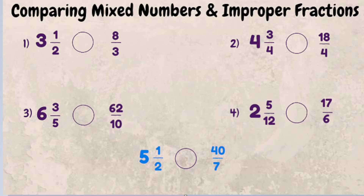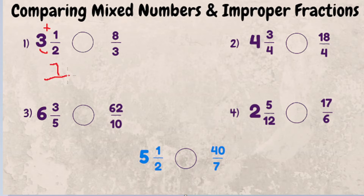Let's jump into the first one. What is three and a half compared to eight thirds — which one is bigger? We've got to get three and a half into the same format as eight thirds. So let's do that by multiplying three times two, which is six, plus one is seven. So seven halves is our fraction.